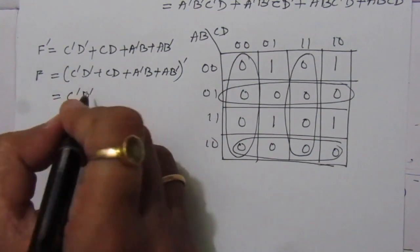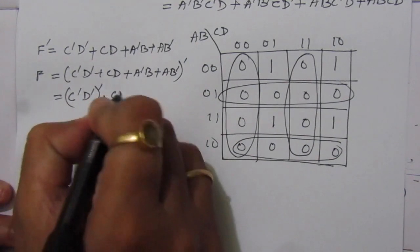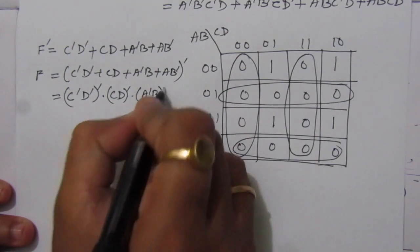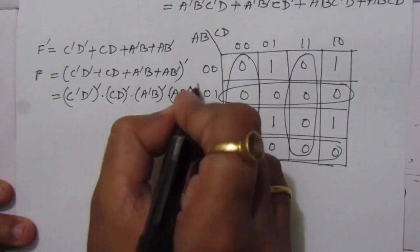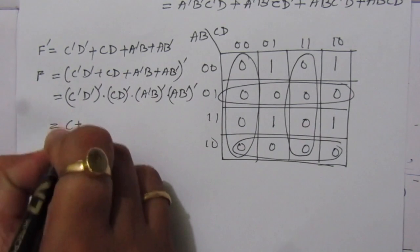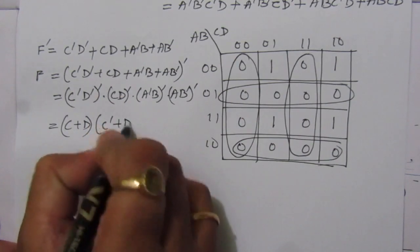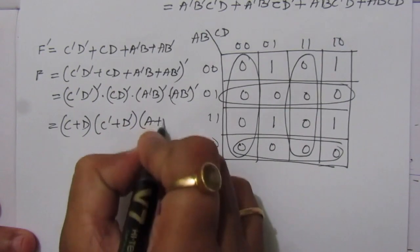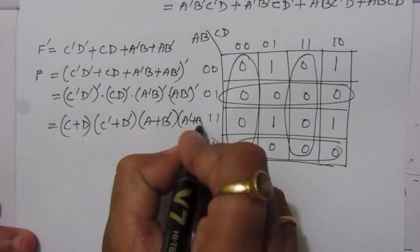So F = (C̄·D̄ + C·D + Ā·B + A·B̄) complemented. Applying De Morgan's theorem to remove the complement, we get: (C̄·D̄)' · (C·D)' · (Ā·B)' · (A·B̄)'. These become (C + D) · (C̄ + D̄) · (A + B̄) · (Ā + B).